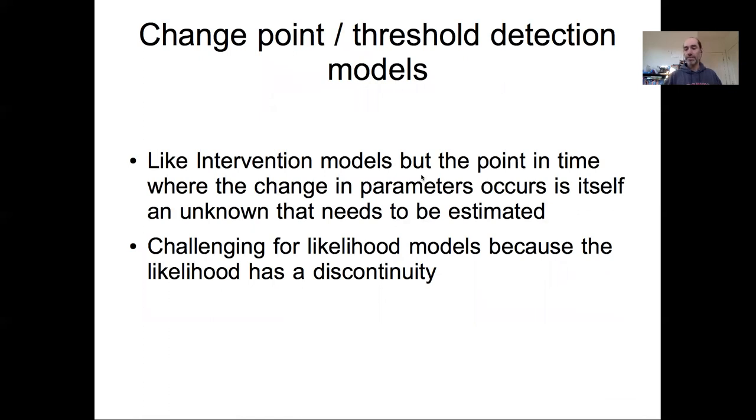One important generalization of this idea of intervention models are what are called change point models or threshold detection models. These models are very much like our intervention process models. But in an intervention process model, the point in time when the change occurs is known because it's imposed externally. In change point models or threshold detection models, we observe a change in the dynamics of the system. What we're trying to infer is not just that things change and how much they change, but when the change actually occurred. So the point in time where there's a change in the parameters is also a parameter that needs to be estimated.